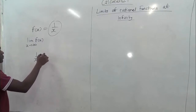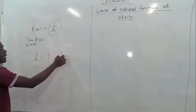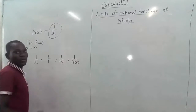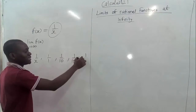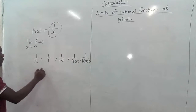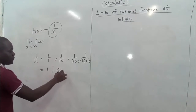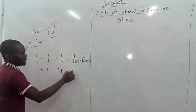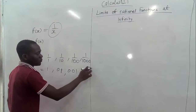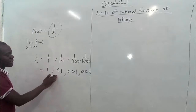When we take x to be 1, we get 1/1. When x is 10, we get 1/10. When x is 100, we get 1/100. And when x is 1000, we get 1/1000. So the values are: 1, 0.1, 0.01, 0.001.